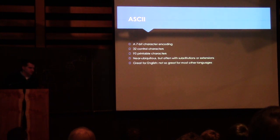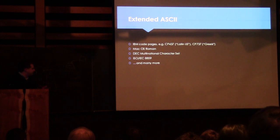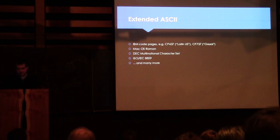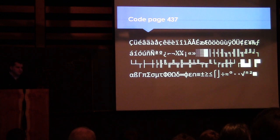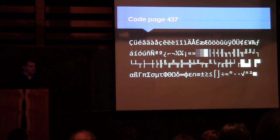Given that we have another 128 values we can store in a byte, different groups started extending ASCII. IBM had code pages for their various systems. macOS had an 8-bit extended ASCII encoding. DEC had one. ISO standardized a number of them. For example, the default IBM PC code page was Code Page 437, which had all the ASCII characters plus additional characters — useful for European languages with diacritic marks, box-drawing characters for drawing shapes on screen, and mathematical symbols for spreadsheet software.